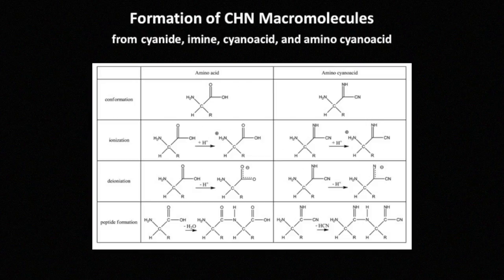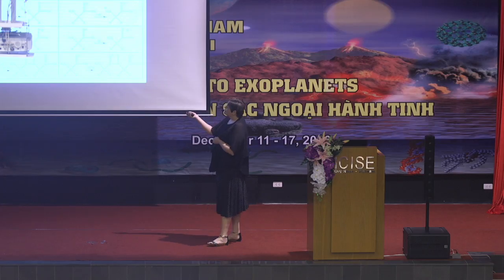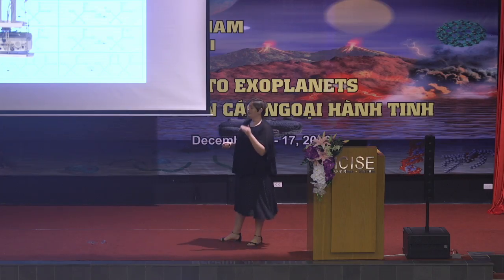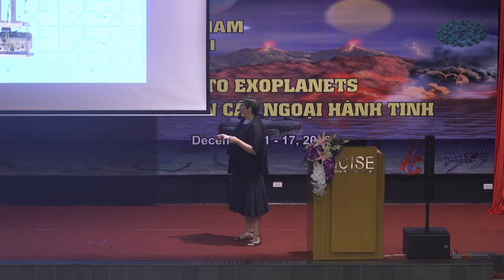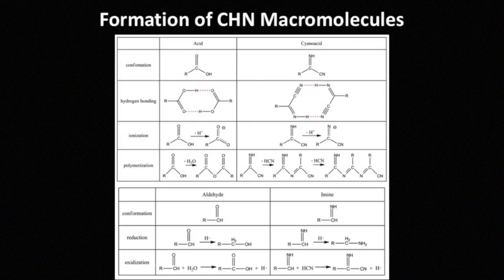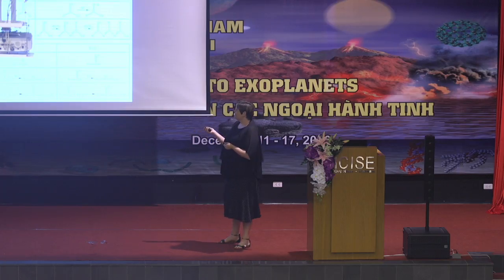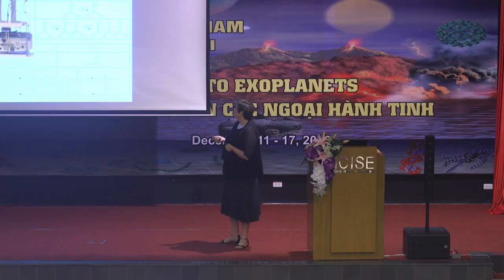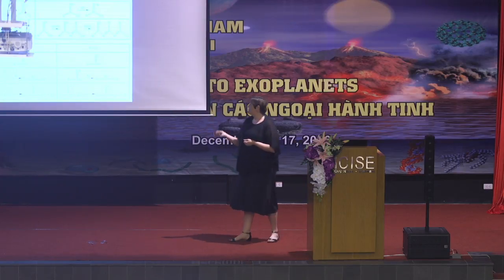As you can see, it goes down the same sort of processes as we use on Earth with our amino acids to form peptides. Here I've given an example of the types of reactions that we think might be possible and useful for life in building up large functionalized macromolecules. Similar to life on Earth, you've got the redox reactions, polymerization, hydrogen bonding, and ionization to form the larger molecules.